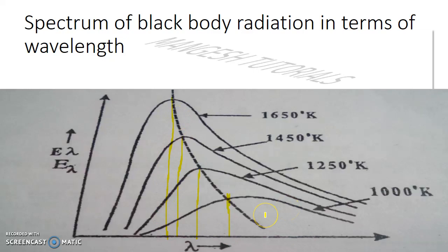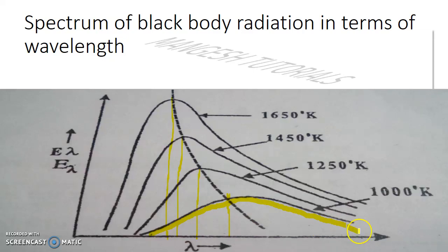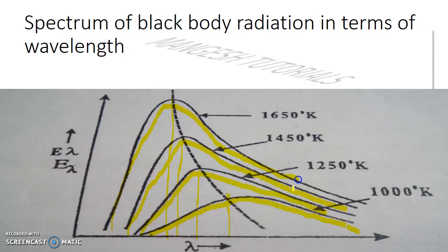The fourth result is that as temperature increases, the total energy radiation also increases. The total energy is represented by the area under the curve. For example, at 1000 K the area is smaller, and at 1250 K or 1650 K the area under the curve — and thus the total energy radiation — is larger.